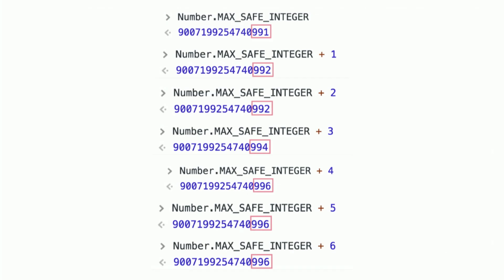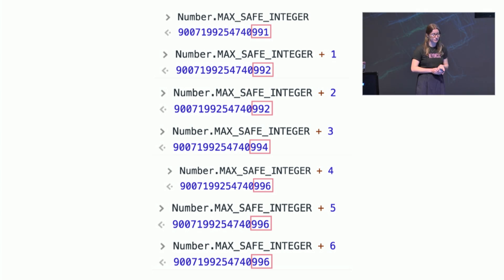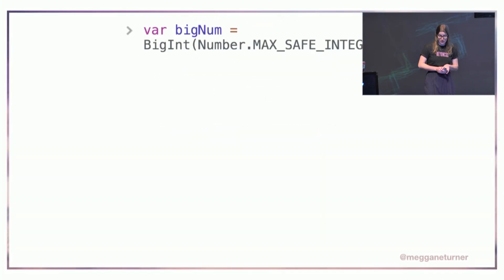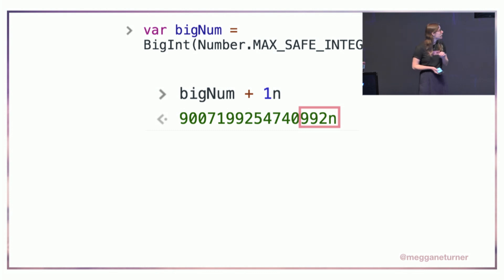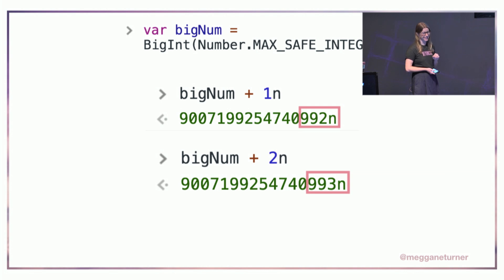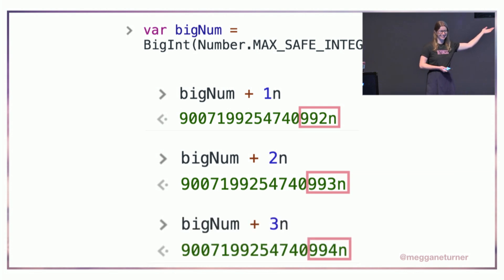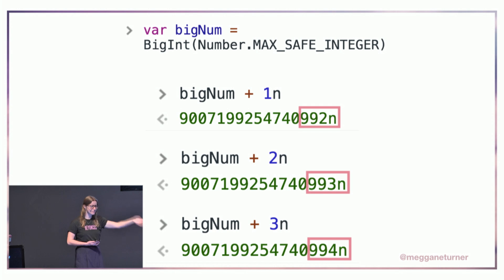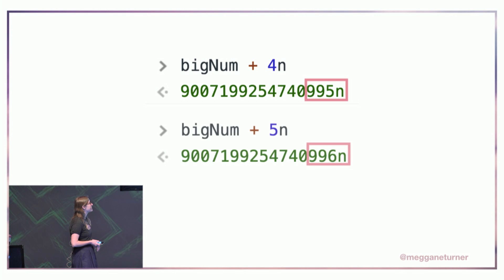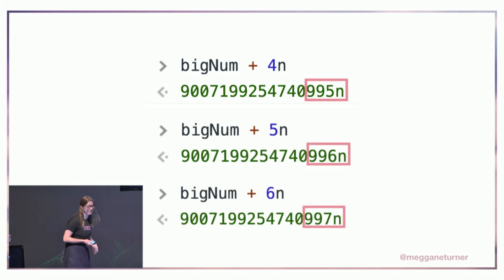Now let's do some real maths with these big numbers. Earlier we had this problem where we were adding to the maximum safe integer and everything was really confusing and weird. Let's try that with our BigInt — I'll set a variable, then add one. It works! It just keeps going — it's so beautiful.